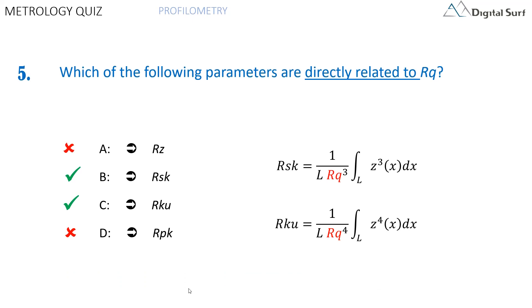The correct answers are B, RSK, and C, RKU. They are the third and fourth moments of the distribution, normalized by RQ. RZ is just the peak to valley height within a sampling length. And RPK is calculated from the Abbott curve with a graphical construction described in ISO 13565-2.